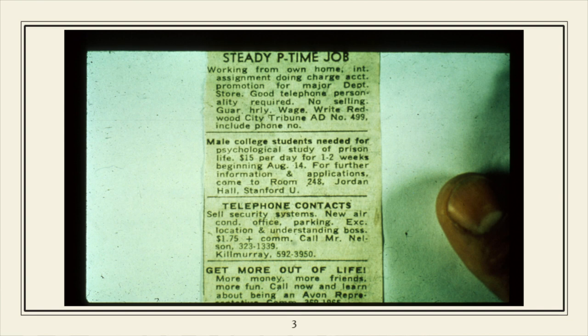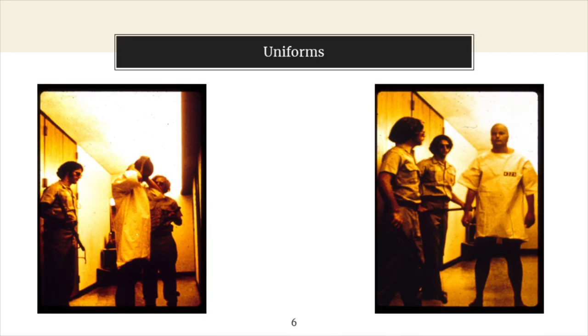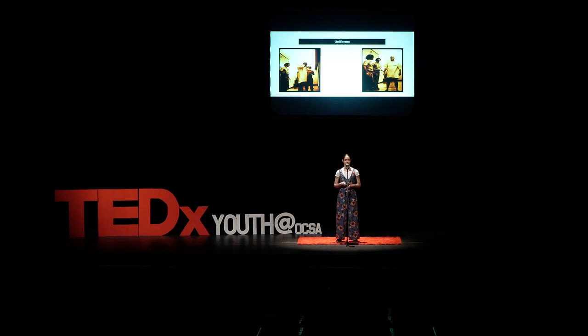Nine were chosen to be guards. Nine were chosen to be prisoners with six alternates. All prisoners were arrested at their homes for armed robbery and burglary, told their rights, spread eagle in handcuffs, hauled into the back of a police car, and sent straight to Stanford County Jail. They were all subjected to a uniform — a simple beige dress with an ID number and a cap made from a woman's stocking.